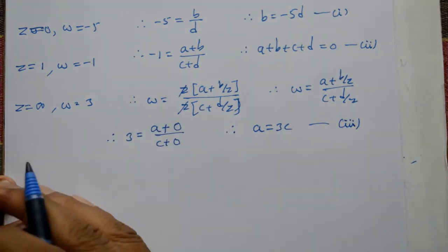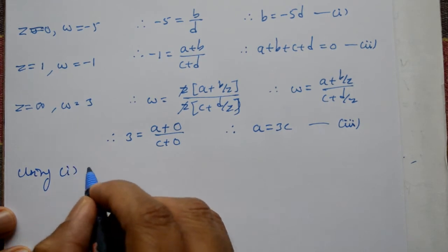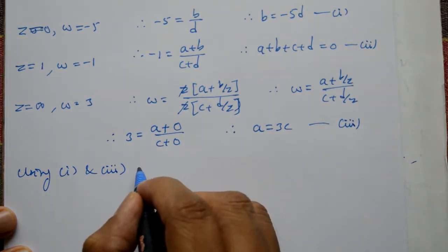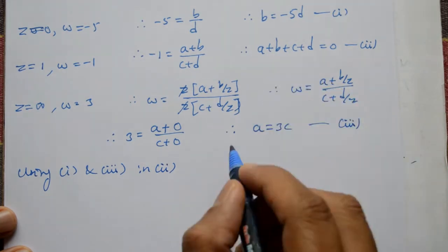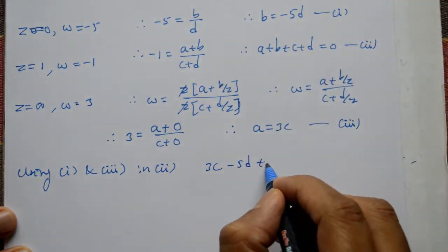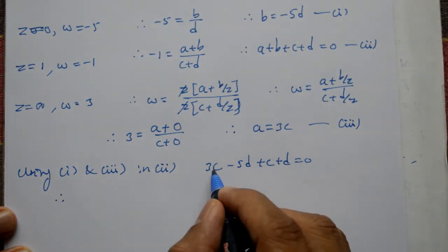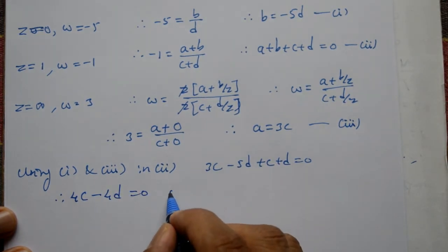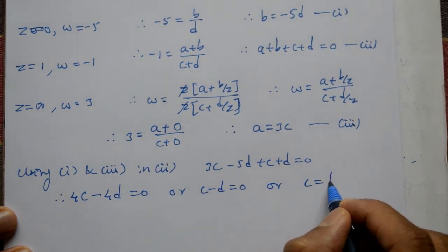Hamko a, b, c, d values chahiye. Equation 1 and 3 ko equation 2 me substitute karte hain: a = 3c, b = -5d. So 3c + (-5d) + c + d = 0, which gives 4c - 4d = 0. Taking 4 common: c - d = 0, therefore c = d.